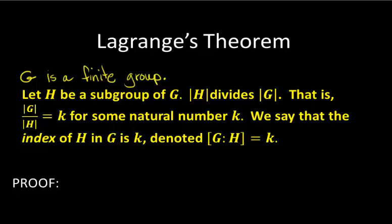To prove that, we're going to look at the set of cosets of H and show that the set of cosets partitions the group. Once we show that, and show that each coset has exactly the same number of elements as H, then we know that the order of H divides the order of G.